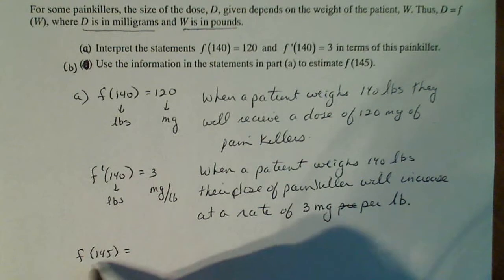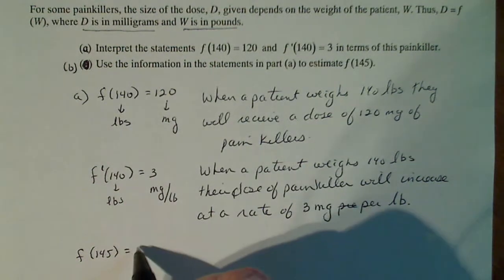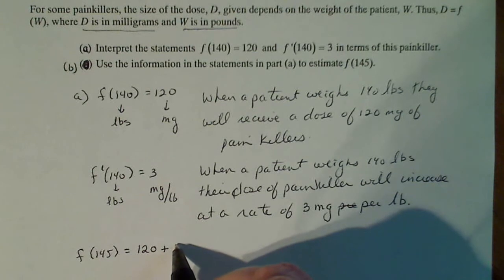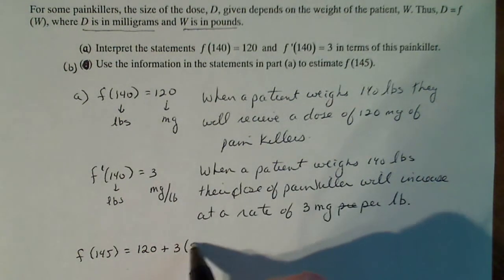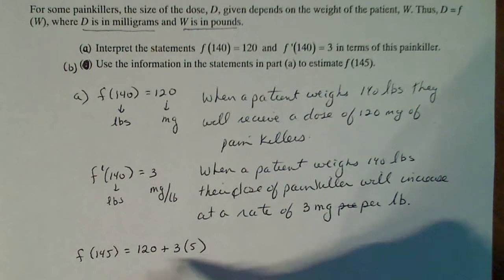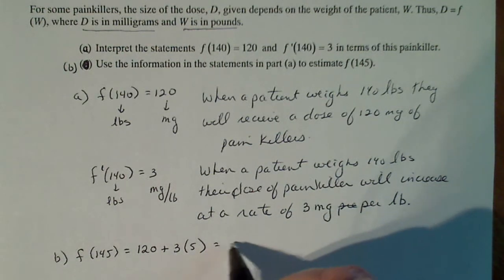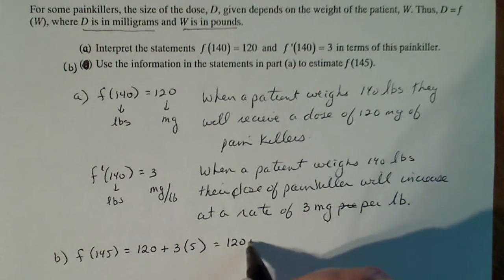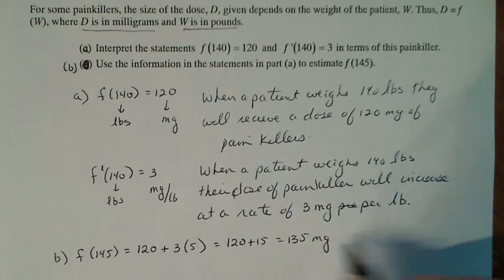So a person with 140 pounds gets 120 milligrams of dose, but I have to add three milligrams per extra pound over 140. So that's where the three and the five come from. So this is going to be 120 plus 15, which is 135 milligrams.